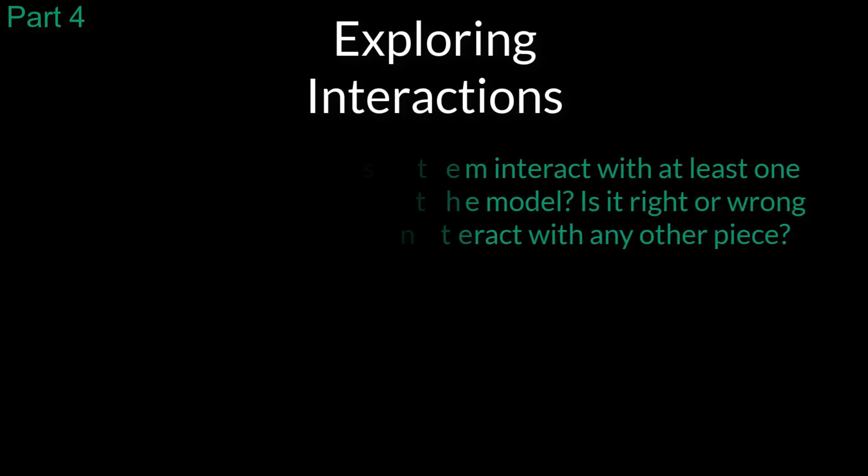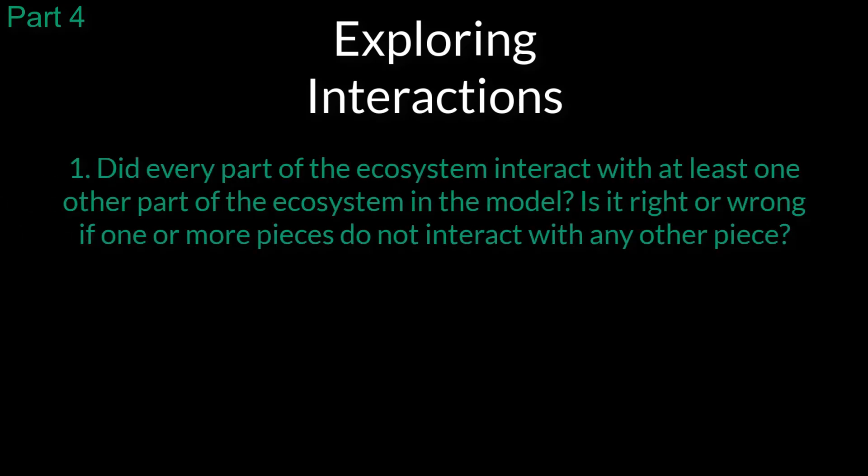Question one: Did every part of the ecosystem interact with at least one other part of the ecosystem in the model? Is it right or wrong if one or more pieces do not interact with any other piece?